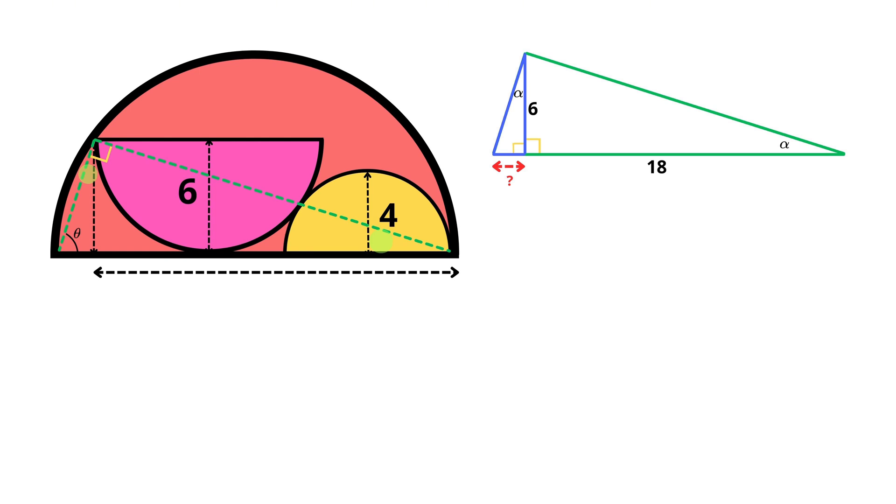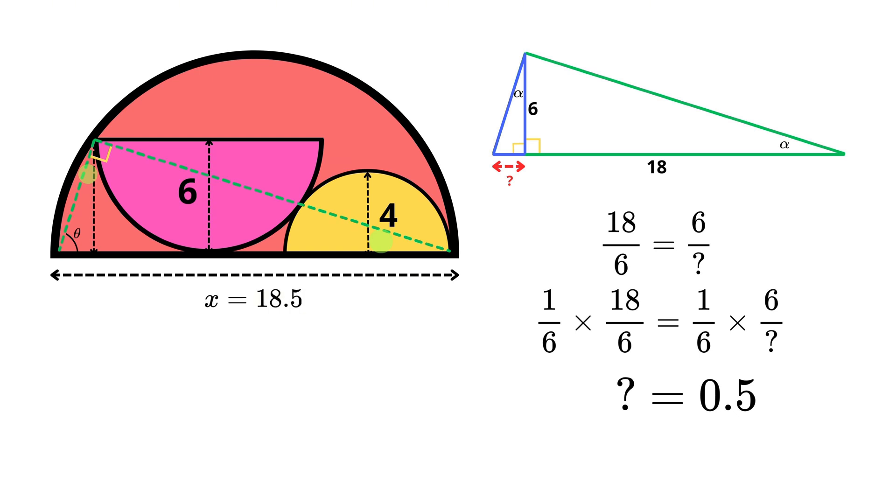So we can say that the corresponding right-angle length in the large triangle, divided by the corresponding right-angle length in the small triangle, is equal to the base length of the large triangle divided by the base length of the small triangle. Or 18 over 6 equals 6 over question mark. And multiplying both sides by a sixth, we find that the length in question is 0.5, meaning that the diameter of the semicircle is 18.5 meters.